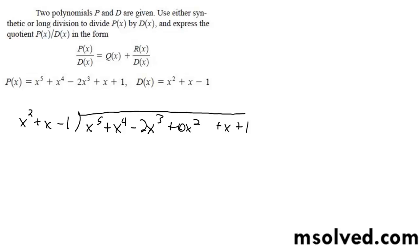So I'm going to divide this by this quantity on the left. Starting off here, x squared goes into x to the fifth, x to the third times.